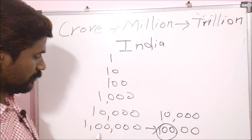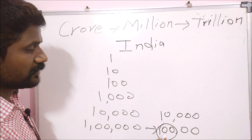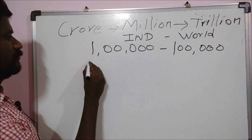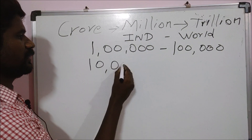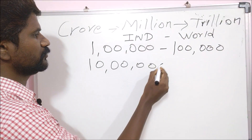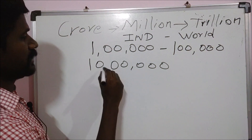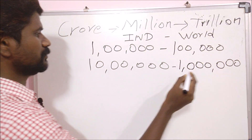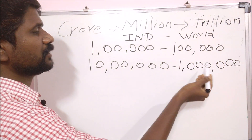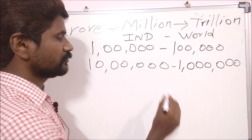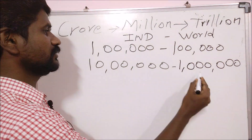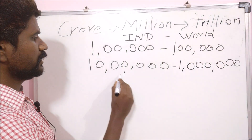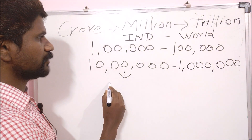So if you want to express two lakhs, you can say 200,000 rupees. And if we go up to 10 lakhs, that equals 1,000,000 — which is 1 million. So 10 lakhs in the Indian system equals 1 million in the Western system.